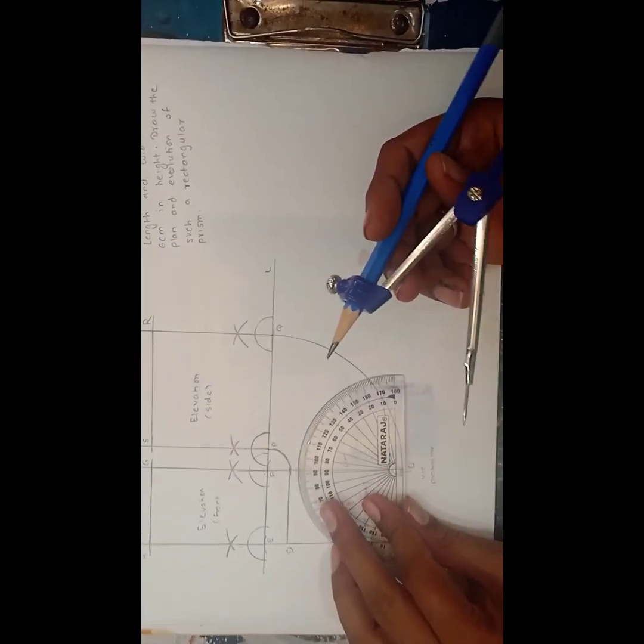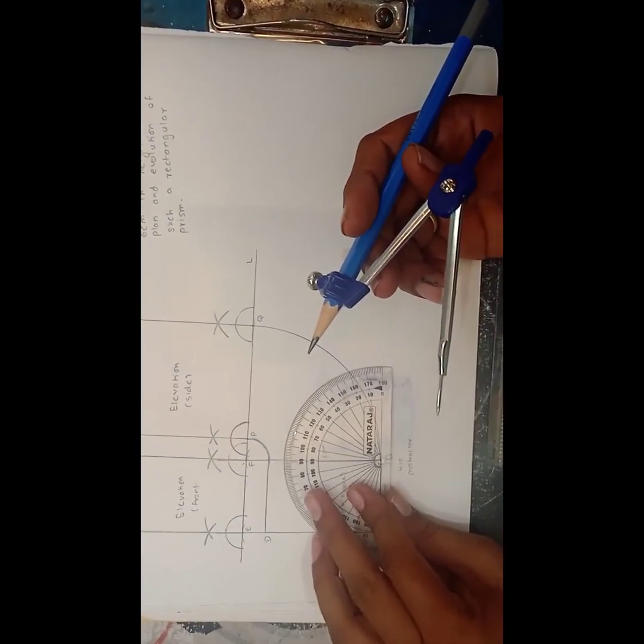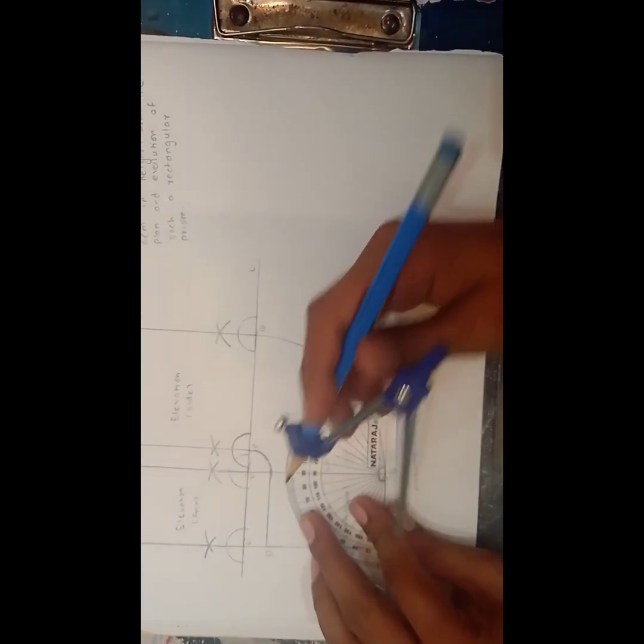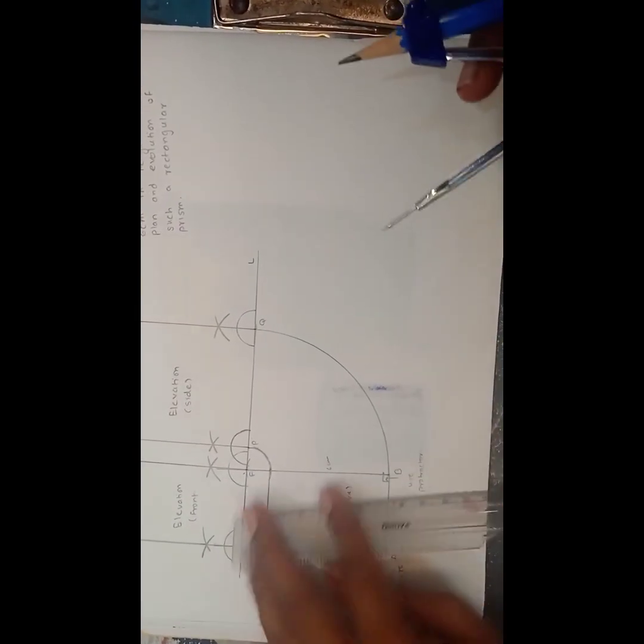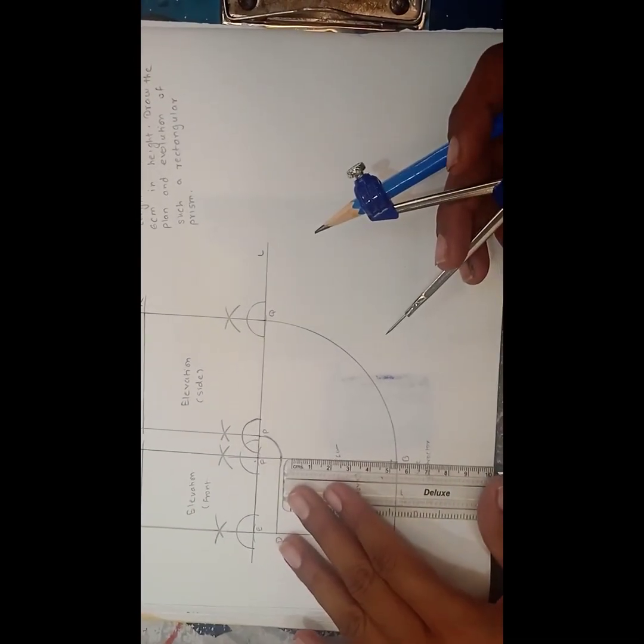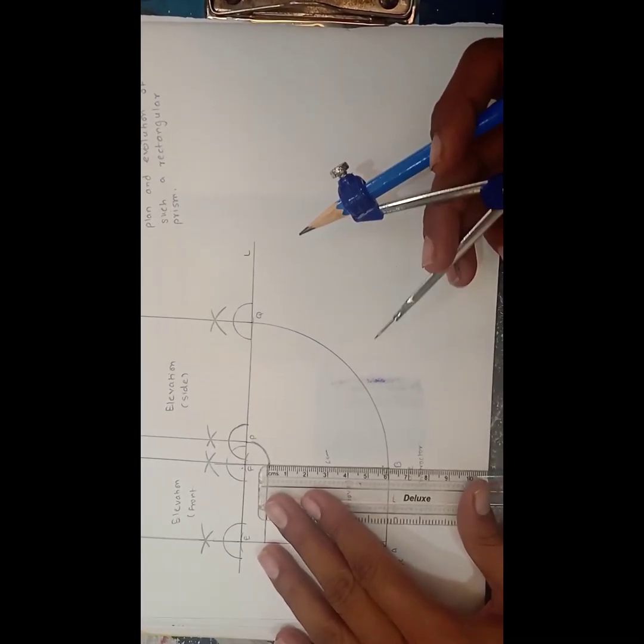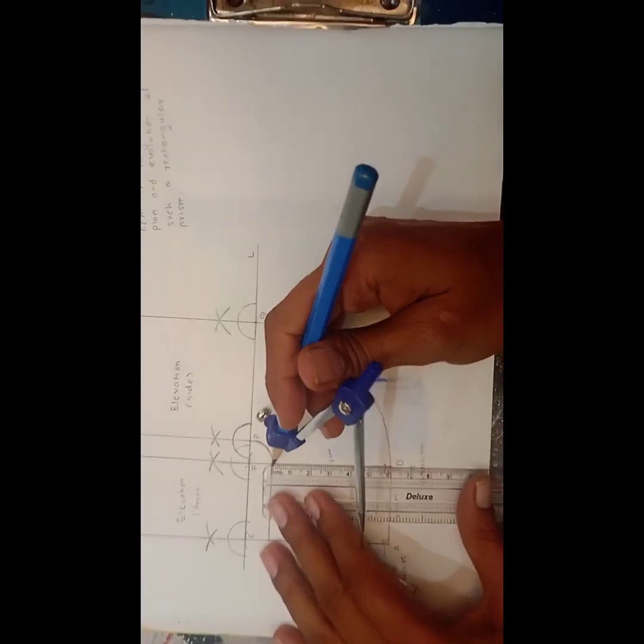Similarly here come on the second point, another point B, and again by using the protractor measure 90 degree and draw a line. Now next measure the 6 cm and put a dot and join these lines.